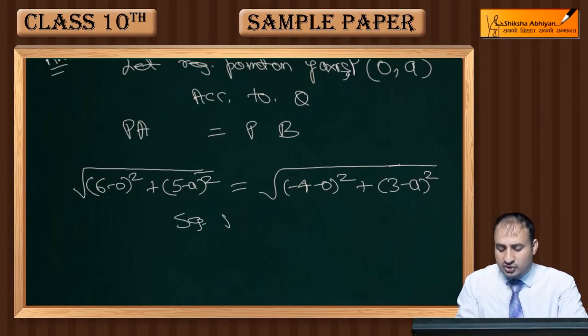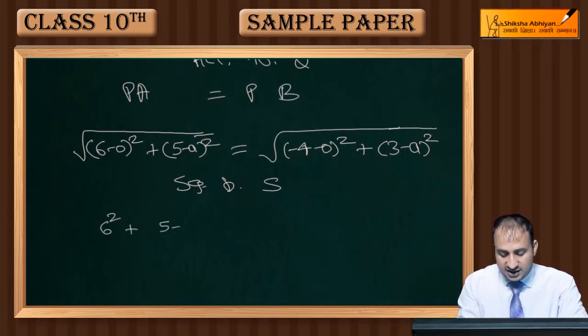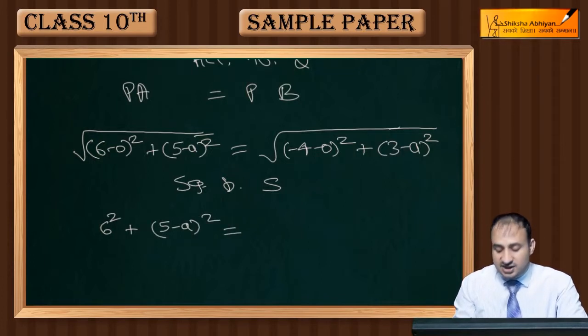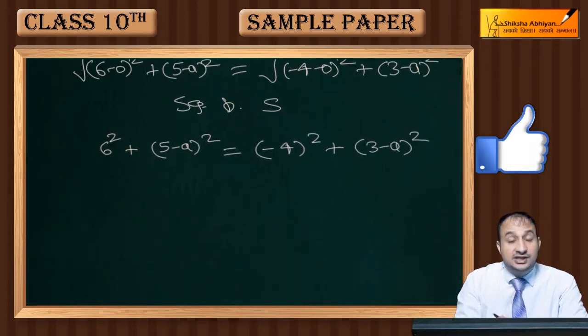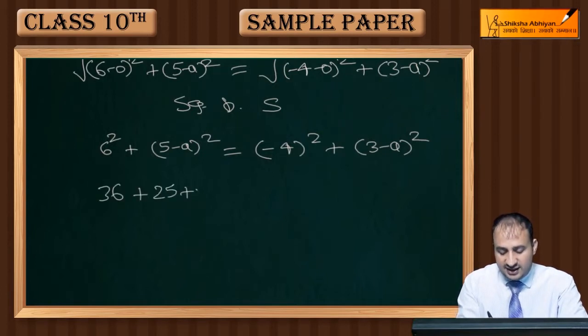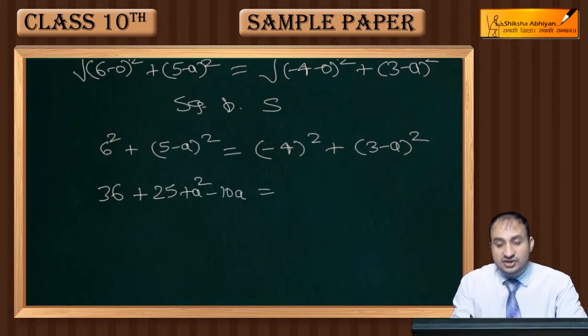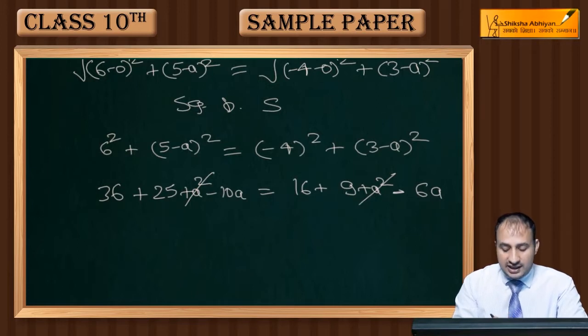Squaring both sides: 36 + (5-a)² = 16 + (3-a)². Expanding: 36 + 25 + a² - 10a = 16 + 9 + a² - 6a. The a² terms cancel out, and 16+9+25 becomes zero after subtraction.